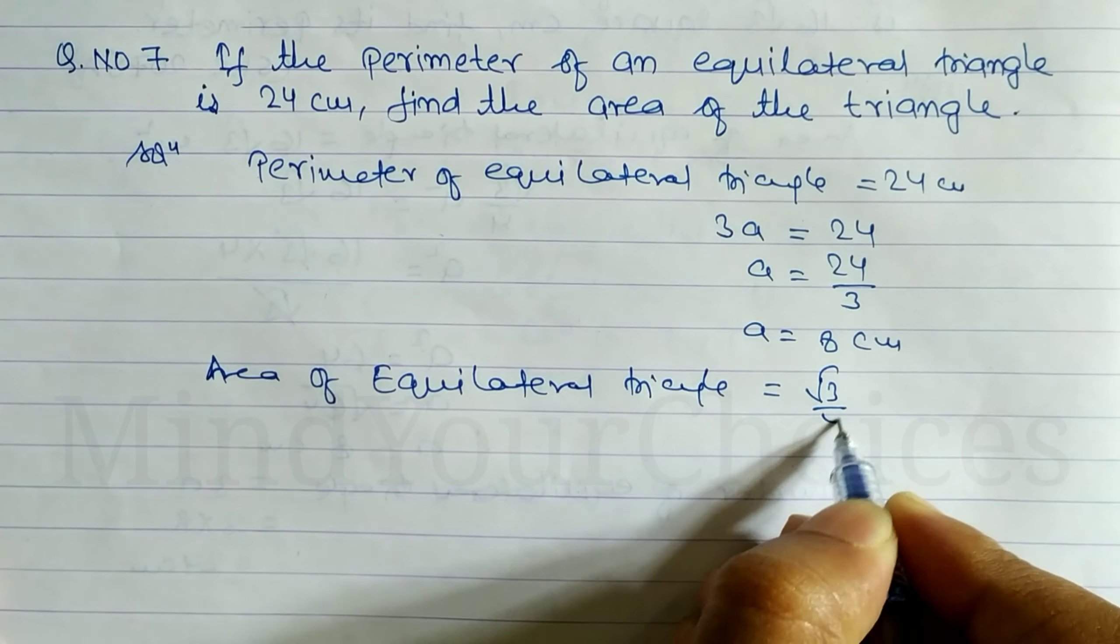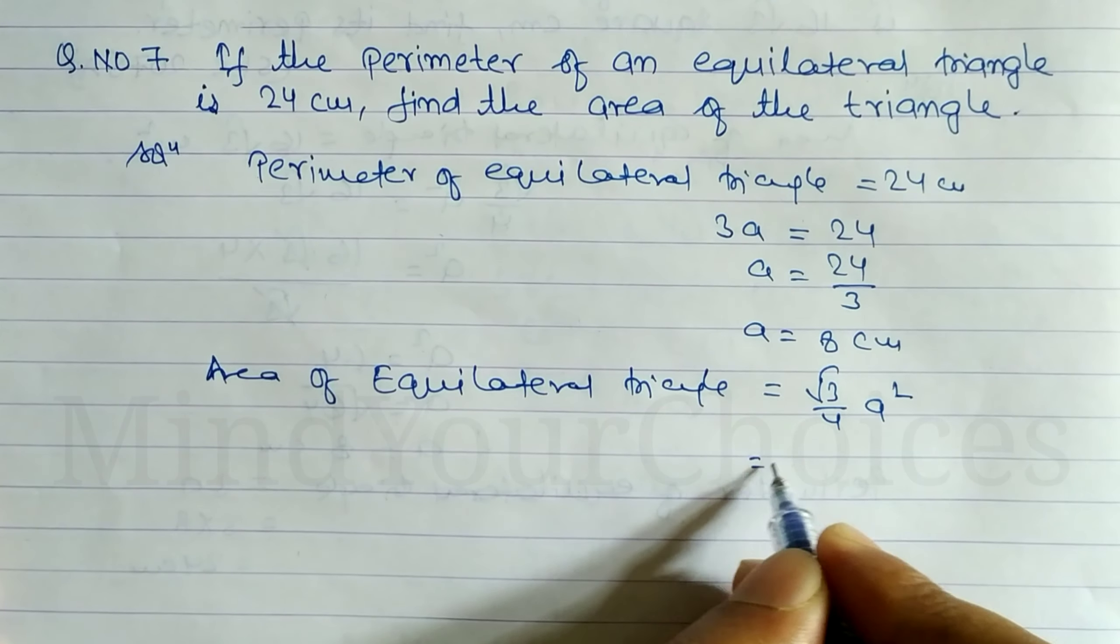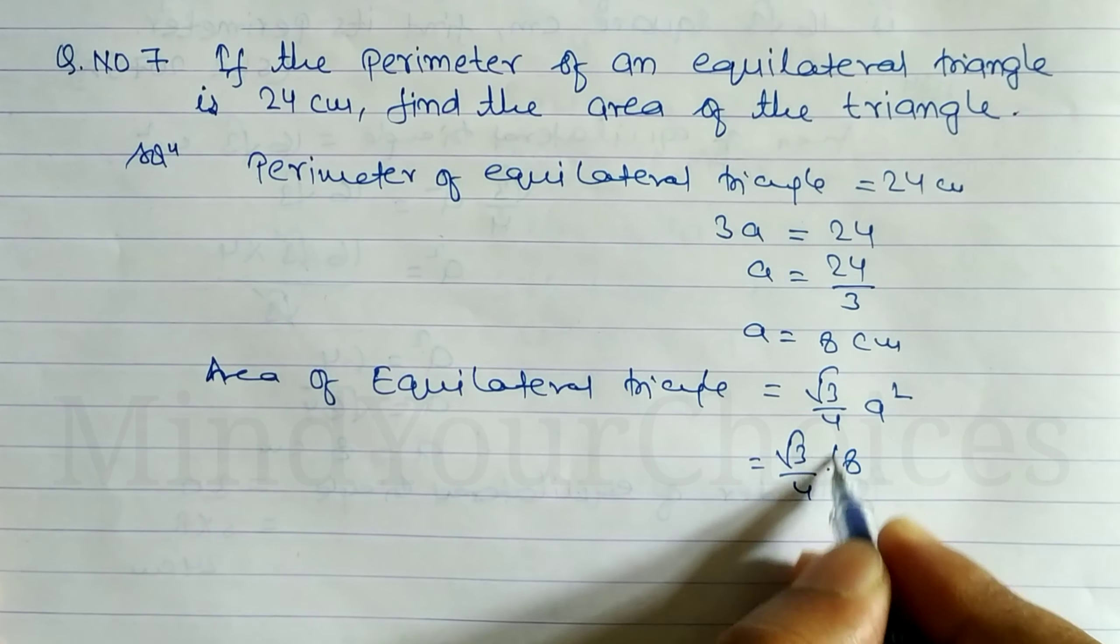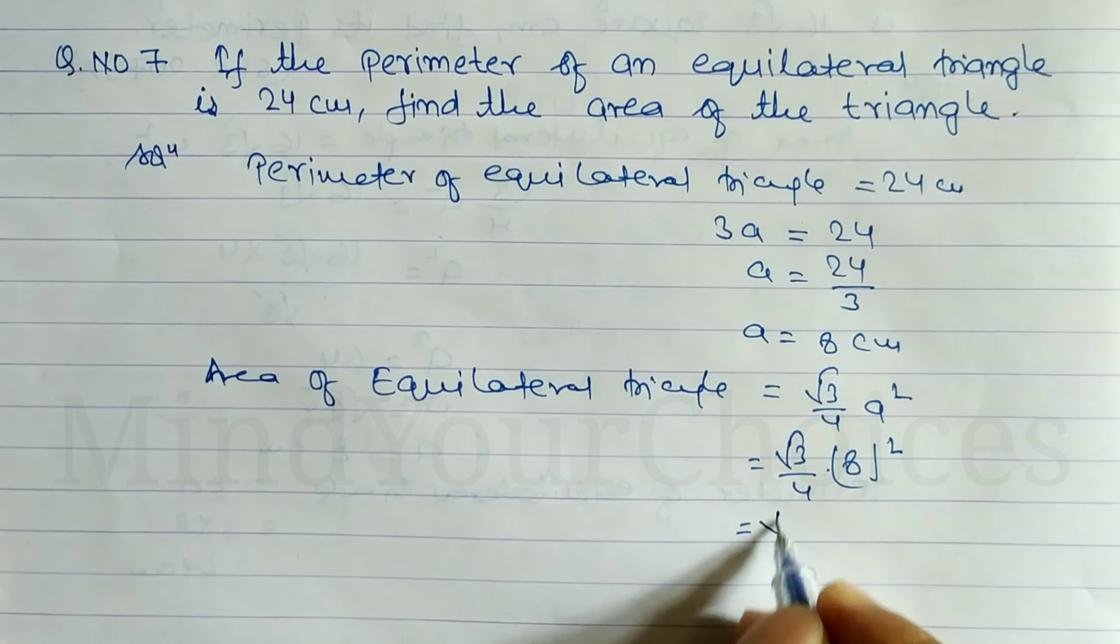Root under 3 by 4 a square. So root under 3 by 4 a value. So we have to write here 8 square, 8 square is 64.